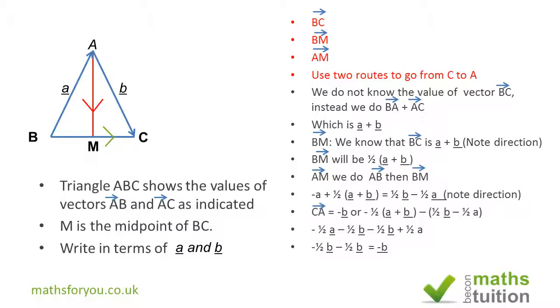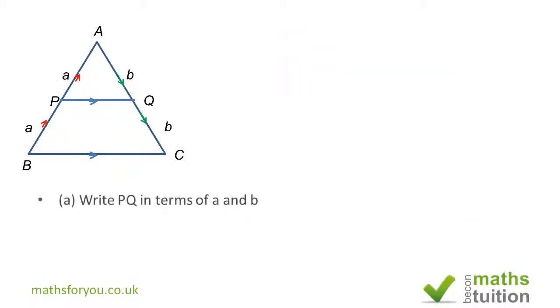Now for the last slide with a triangle in which P is somewhere between A and B, and Q is halfway between A and C. We need to go from P to Q, and because we do not know the magnitude of PQ, we need to go from P to A and then from A to Q. P to A has a magnitude of a, and A to Q has a magnitude of b, so PQ is a plus b.